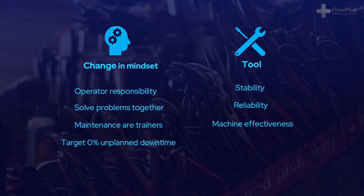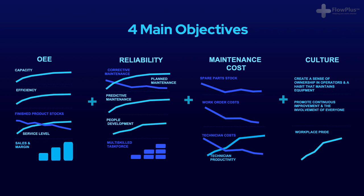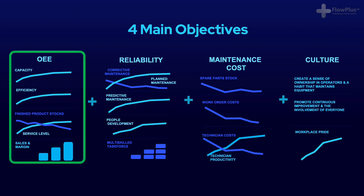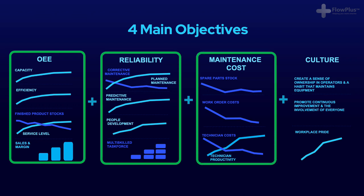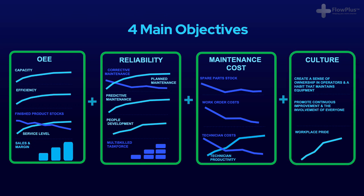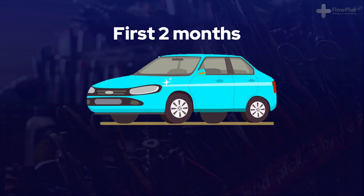TPM is as much a mindset shift as it is a tool. The tool itself enables stability and machine effectiveness, but as with many lean tools, if not embraced properly, it will not have the true impact that it could have. The four main objectives can be summarised as: maximising overall equipment effectiveness or OEE, improving reliability, reducing overall maintenance cost, and developing a continuous improvement culture.